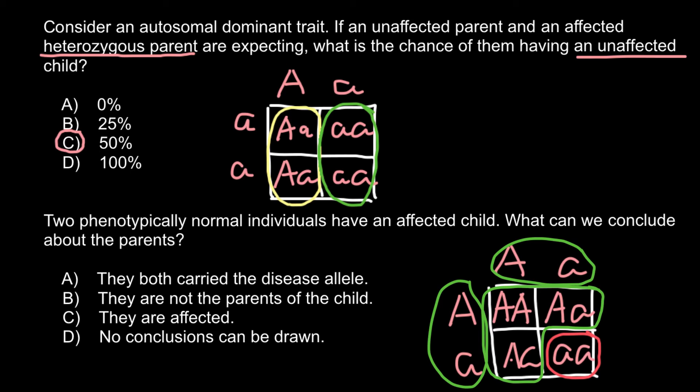So our answer is A: they both carry the disease allele, and this is true. Other answers include they are not the parents of the child, which can also be an issue, but it's very unlikely that such an event in a modern hospital may happen. Much more probable that both parents carried this disease in heterozygous form and would be carriers.